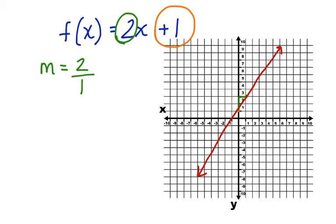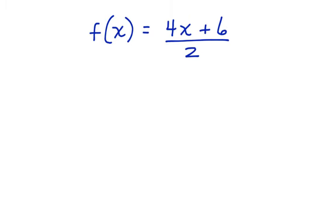Let's take a look at another one. The function of x is equal to 4x plus 6 divided by 2. Well, the first thing we're going to do to work through this problem is we're going to divide by 2. So we're going to divide 2 into both of these terms, and we're going to do that before we try to identify the y-intercept and before we try to identify the slope.